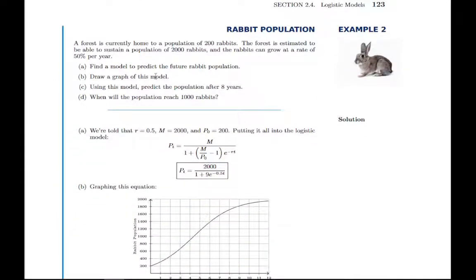Then this example kind of puts things together where you, first of all, will predict the population in a future time, and then you'll find the time when the population reaches a certain level. Just like we've done with linear, quadratic, and exponential models.